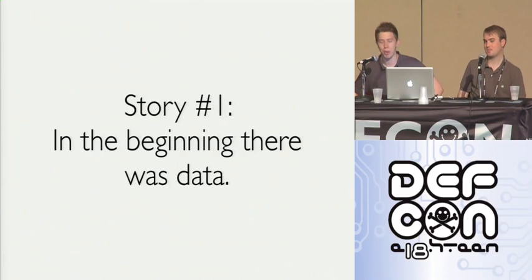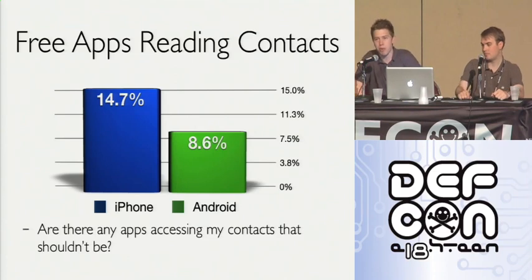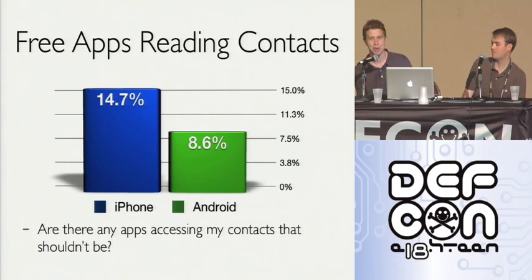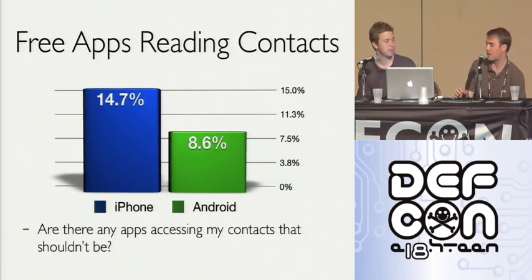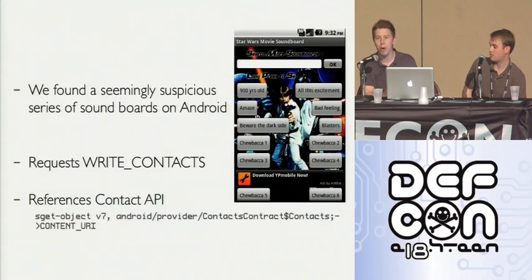We're going to go through some results as a series of stories. Story number one: in the beginning there was data. When we first got this dataset, we asked a first question: are there any applications accessing contacts on my device that maybe shouldn't be? We thought we'd find like 10 applications that stick out like a sore thumb. It turns out a very large number of applications access contacts on both platforms. One motivation is that early mobile malware, especially on Symbian, used SMS and MMS to auto-spread through contact lists.